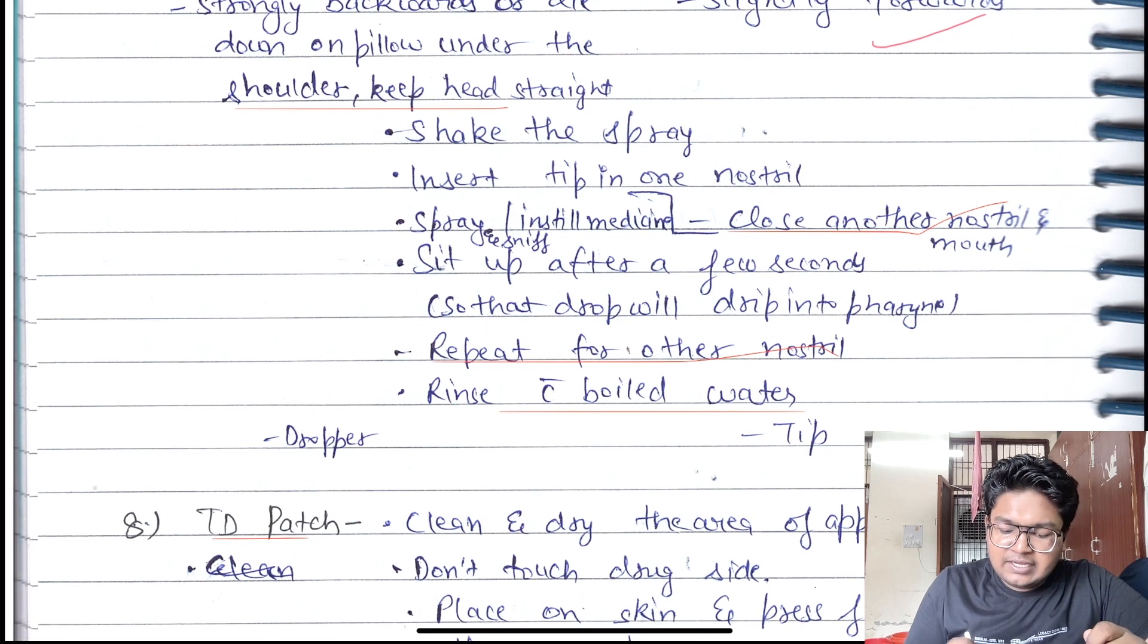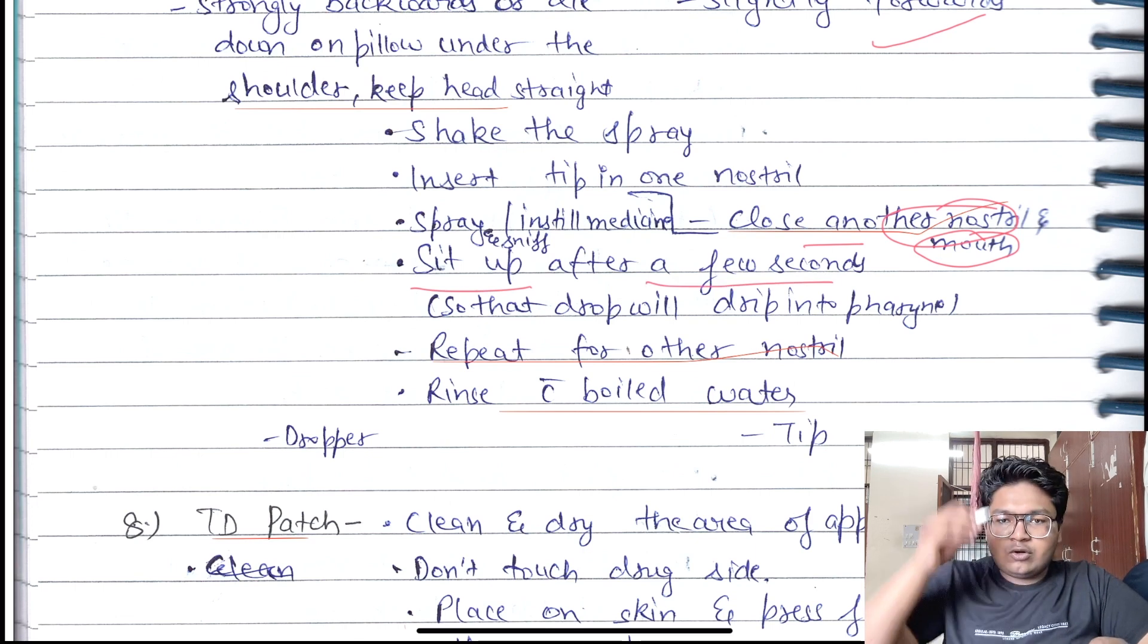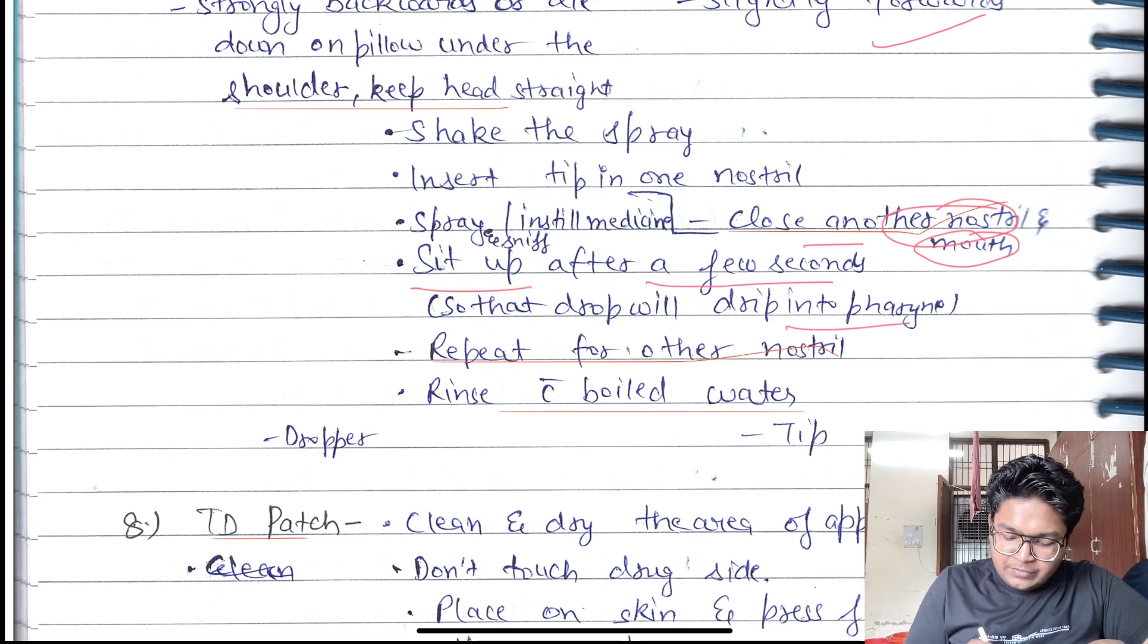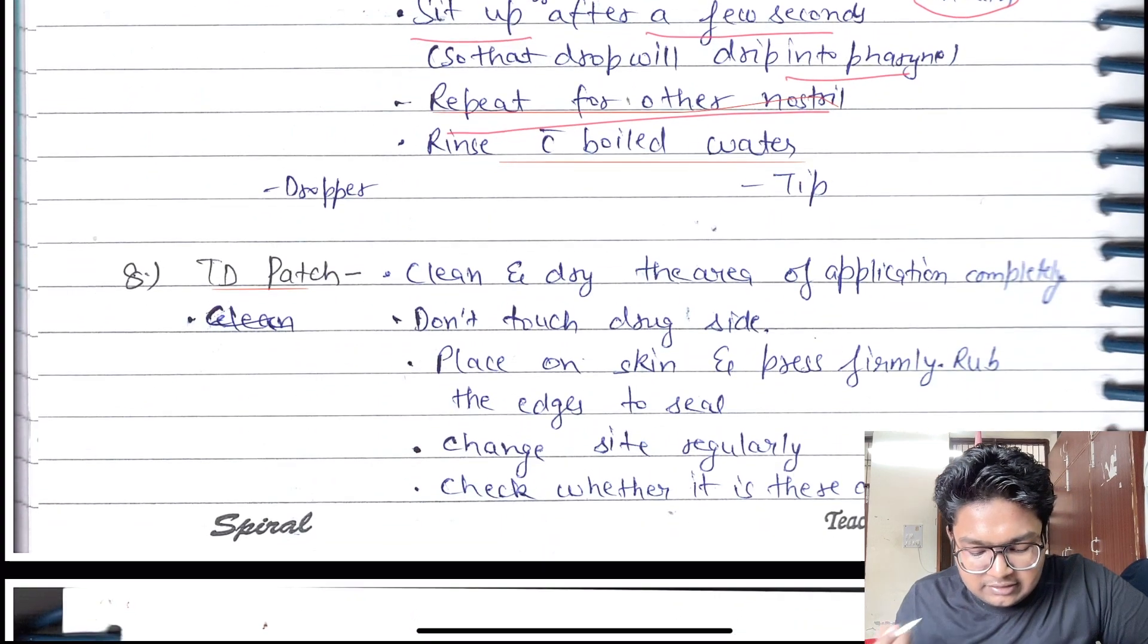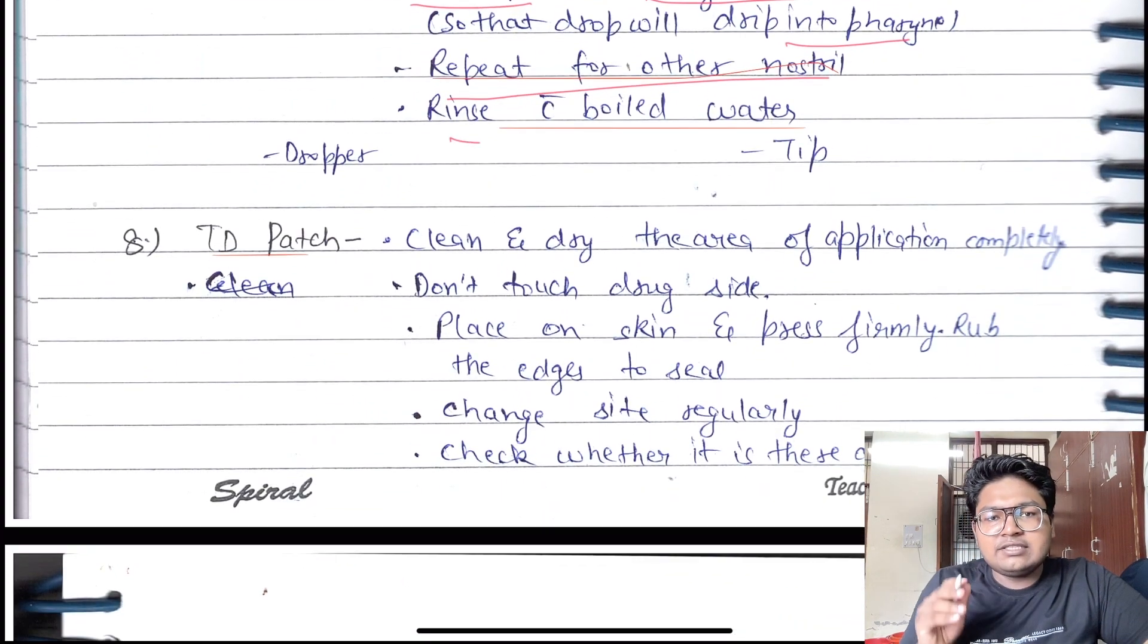Insert the tip in the nostrils, spray or instill medication. Close the other nostril and mouth. Sit up after a few seconds and the drop will drip into the pharynx. Repeat for the other nostril and rinse the tip and dropper with boiled water to prevent infections.